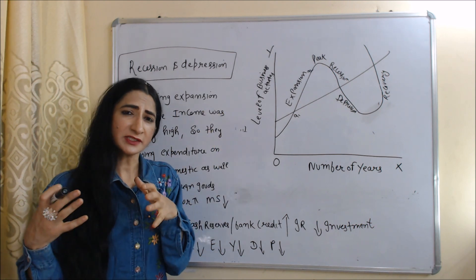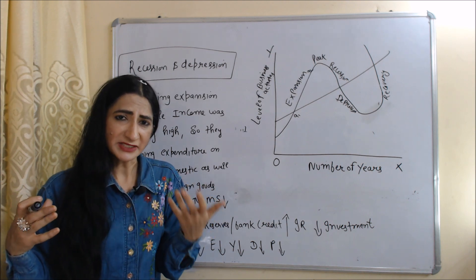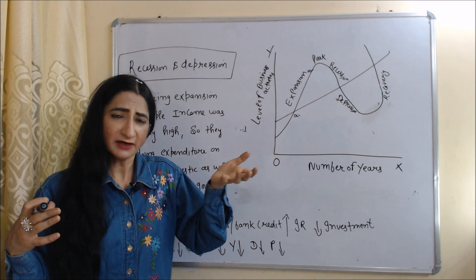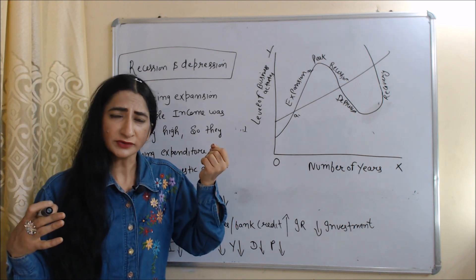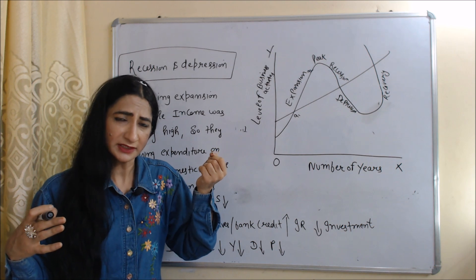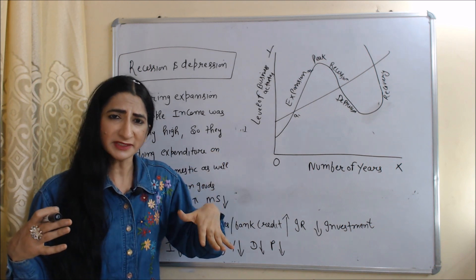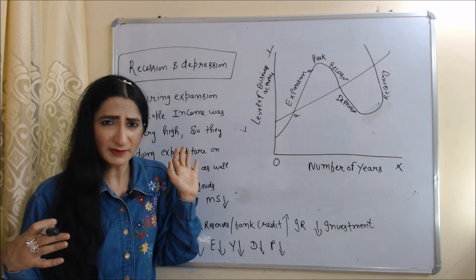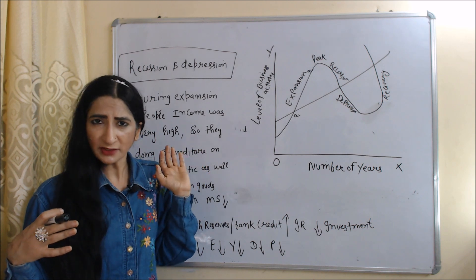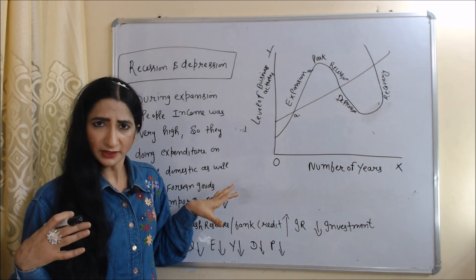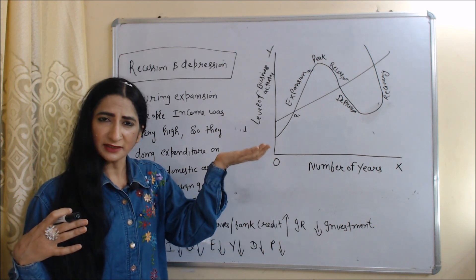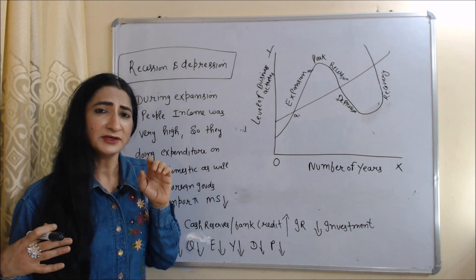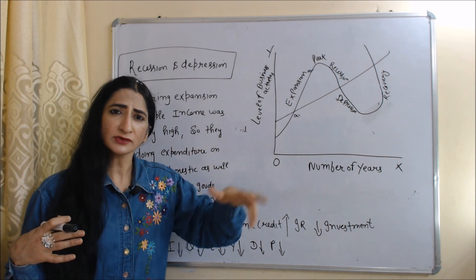Now we will see how the economy moves towards recession and depression. During expansion, people's income was very high, so they were spending on domestic as well as foreign goods. If they are spending on foreign goods, our imports are increasing. If imports continuously increase, our money supply is going to other countries, which reduces money supply in our country. If money supply reduces, bank credit also reduces.